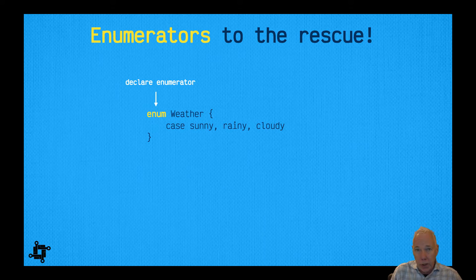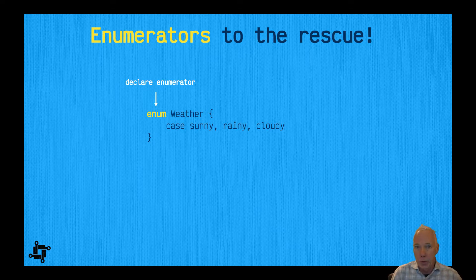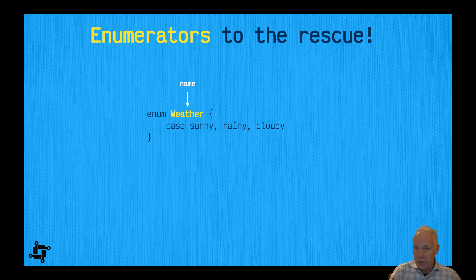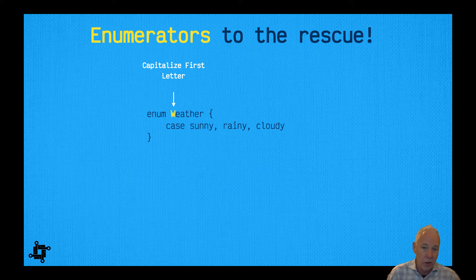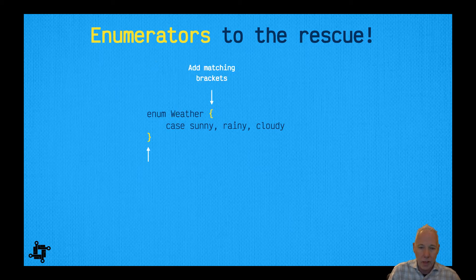We declare an enumeration type using the keyword enum. Notice the pattern: a variable is var, a function is func, an enumeration is enum. It's followed by a name — just like func has a function name, or var has a variable name. Here we're calling it Weather with a capital W. That's the convention: always capitalize the first letter of a type, just like Int, String, Double, and Bool.